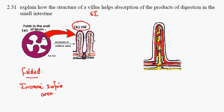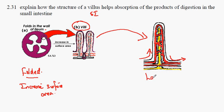Here we're showing two villi. Each villus has its own blood supply. Expanding this diagram to look in more detail, we find that the villus has on the inside a blood supply going in and then flowing out. Also in yellow, the structure you can see is called a lacteal. We'll return to that in a moment.